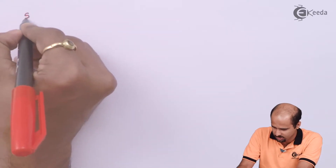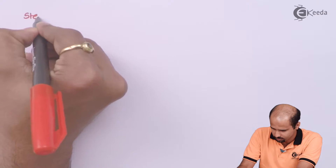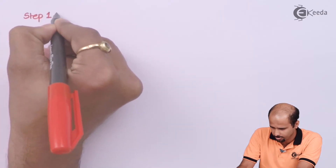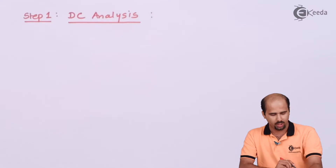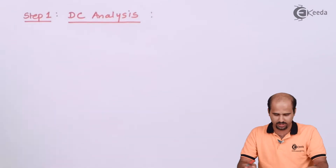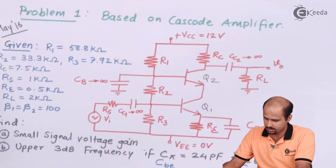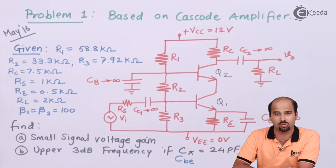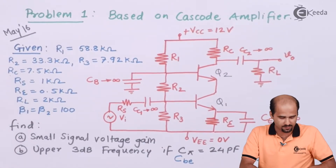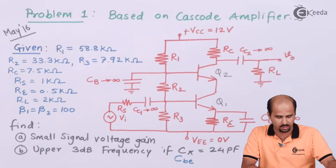We will just touch the parameters that are important for the finding perspectives. Step 1 is DC analysis. As far as voltage gain is concerned, what is the voltage gain for a cascode amplifier? We need to draw the fundamental AC equivalent model of the cascode amplifier.